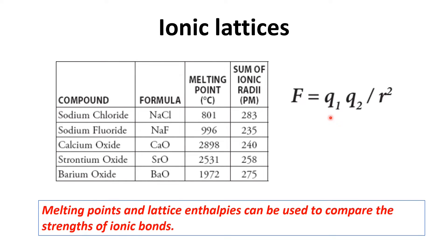Let's see how the charge of the ions affects the force of attraction. Comparing the first two compounds and the last three compounds: the first two compounds have a charge of one, and the last three compounds have a charge of two. For the first two compounds the melting point is lower because the charge is lesser than these three compounds.